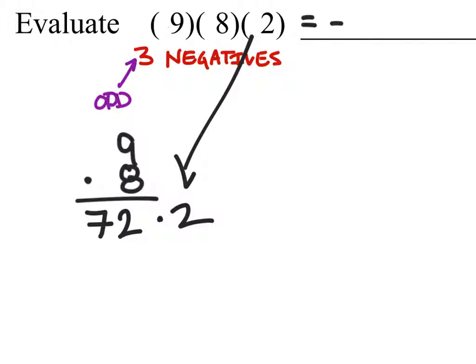So 72 times 2, let's go ahead and set that up. And we have 2 times 2, which is 4. 2 times 7, which is 14. We'll carry that 1 down. And this is our answer, 144.